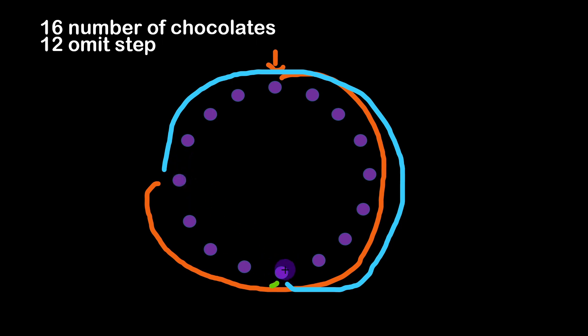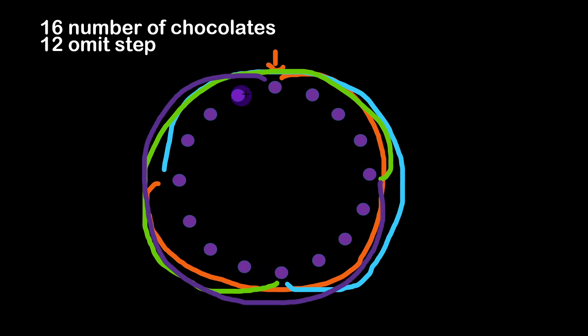From there, jumping 12 one more time leads to another position, and from there omitting 12 again brings us back to chocolate number zero. So indeed we always go back to the same position we started from. I don't have the mathematical proof for this, but we can see it clearly from the examples. So the least common multiple provides the length of the chocolate count we consider before finding one empty chocolate spot.